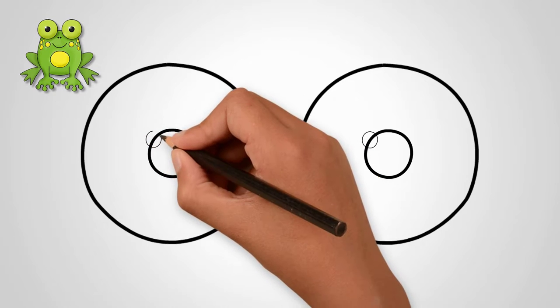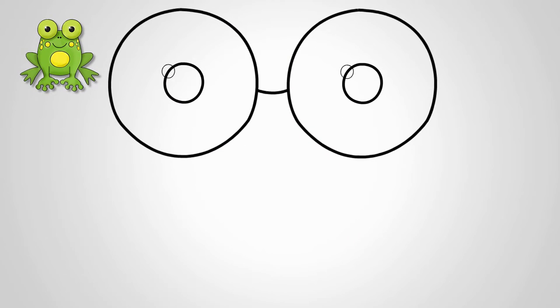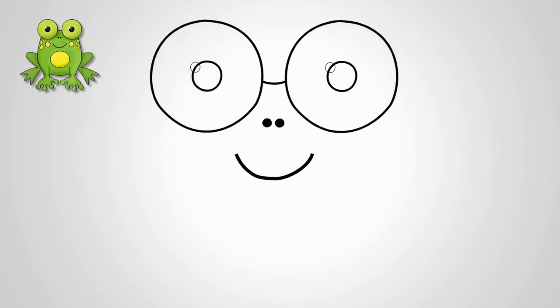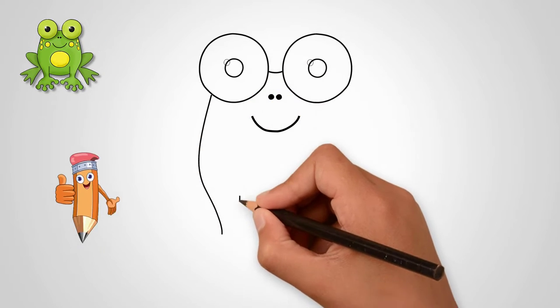In the middle draw the pupil of the eye. And in the second eye too, draw the pupil. From below the eyes we draw the nostrils of the nose and the smiling mouth.